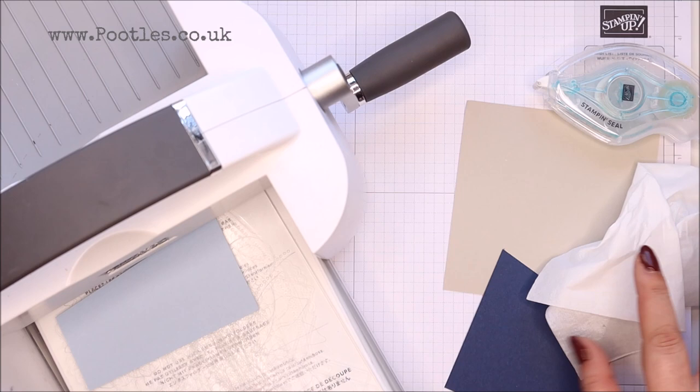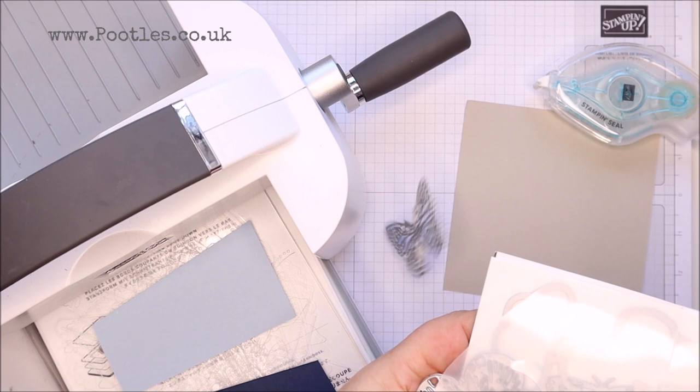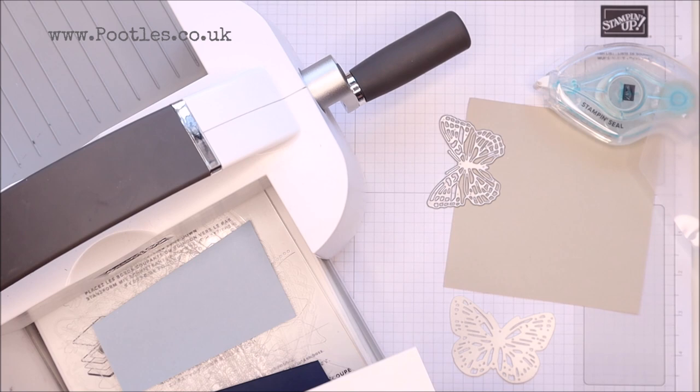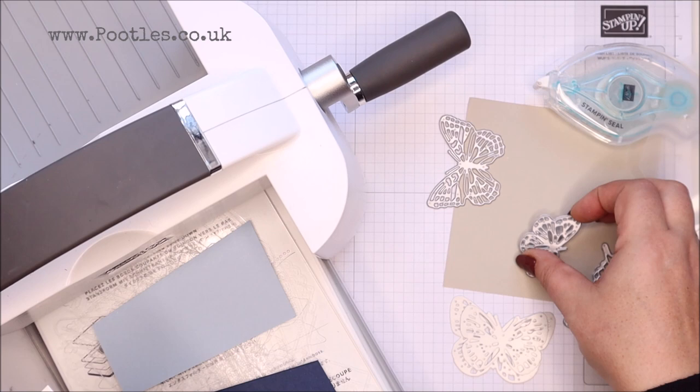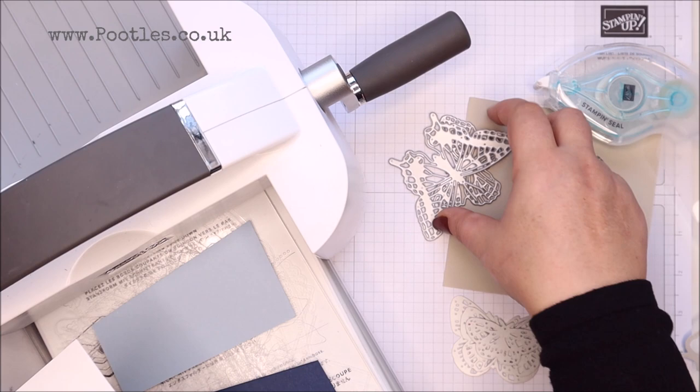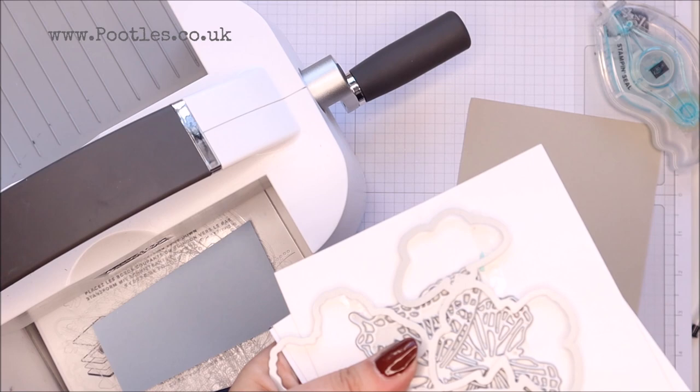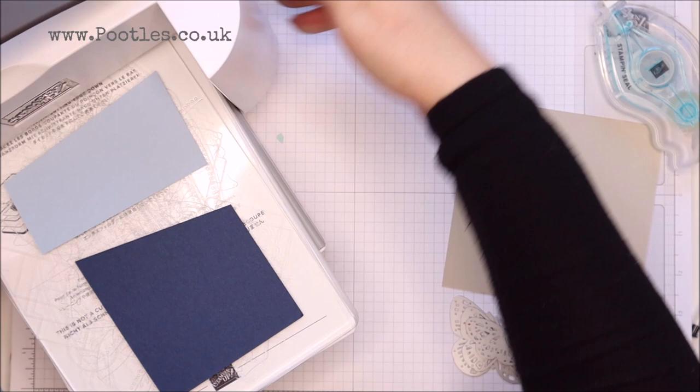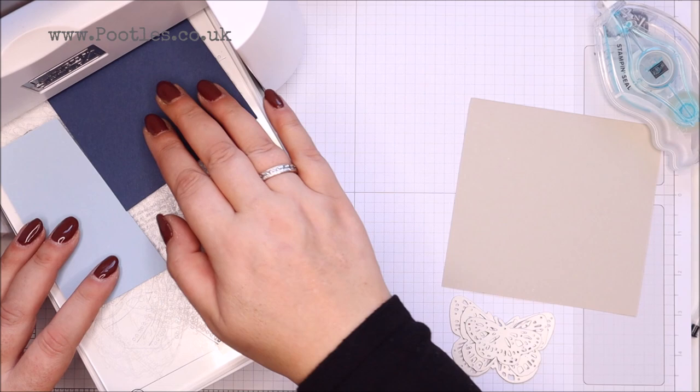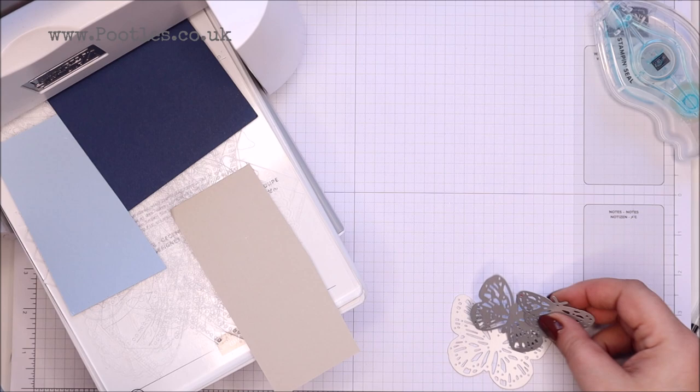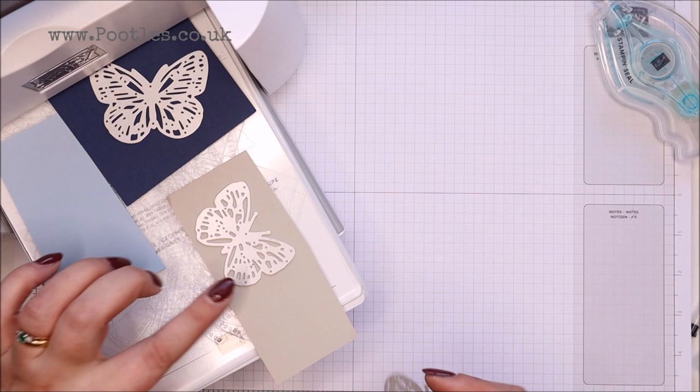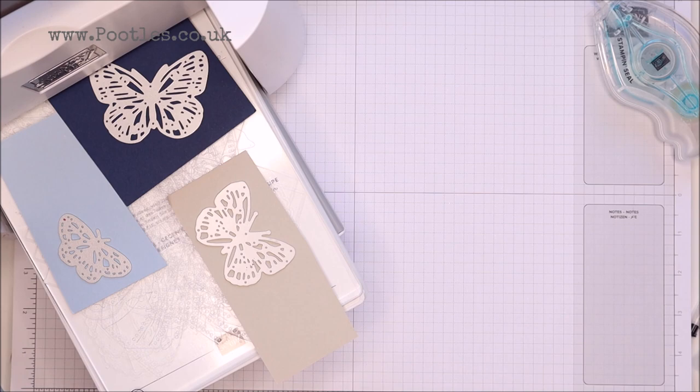And I don't want enormous butterflies across my page. So I want three that are going to layer. Those three would layer quite well. Can you see those? So there's three of them there. And what I'm going to do, I want my biggest as the dark, my medium one to be this Sahara sand, and then my smallest to be this pale blue. So I'm going to put those on and then another clear plate over the top.